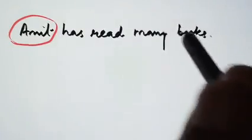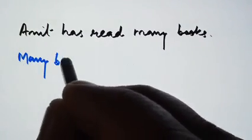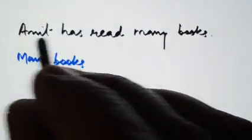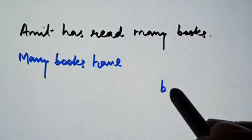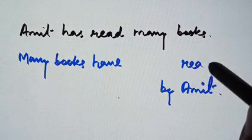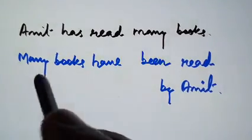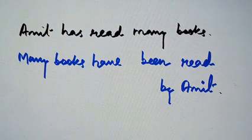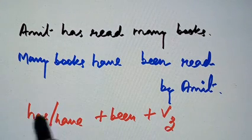Let's take another example: 'Amit has read many books.' We replace the subject and object — 'many books' comes first. Since 'many books' is plural, we use 'have', and 'Amit' goes to the end as 'by Amit'. 'Read' is already the third form, so it remains. We introduce 'been', giving us: 'Many books have been read by Amit.' So the rule for present perfect in passive voice is: has/have plus been plus third form of the verb.